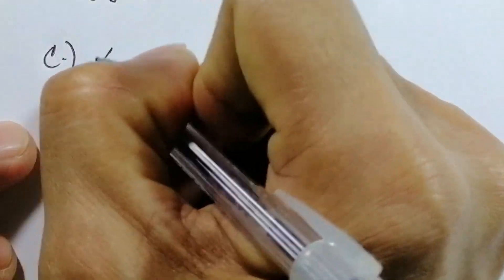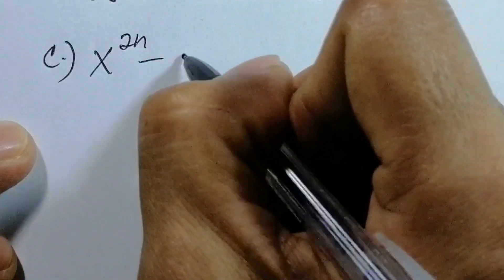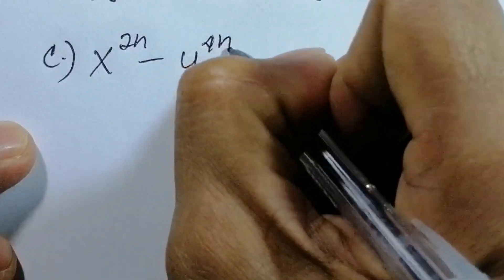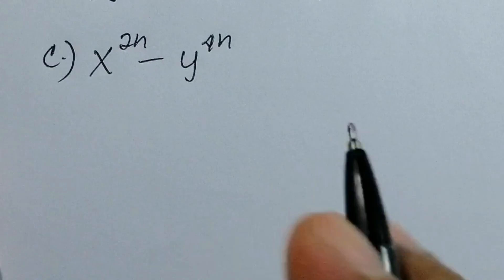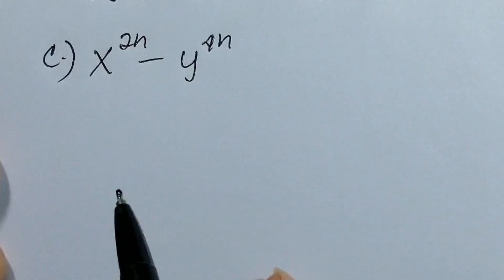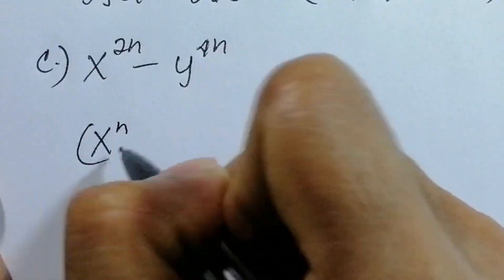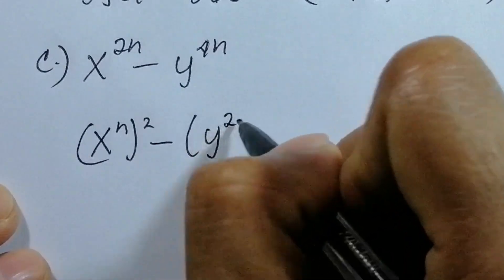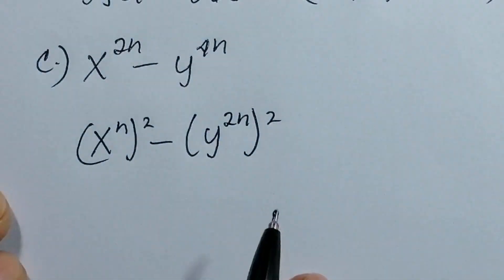Letter C: x^(2n) - y^(4n). This is a difference of two squares. We write this as (x^n)² and (y^(2n))².